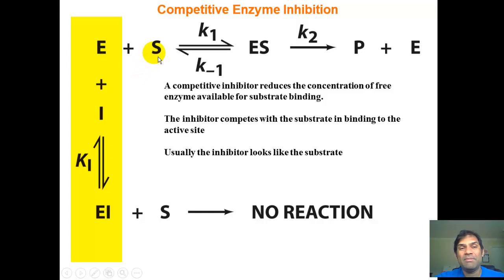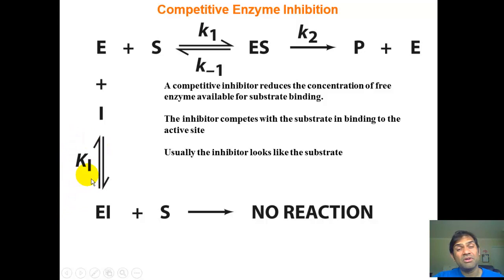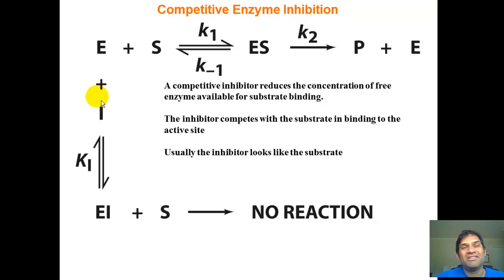When the inhibitor occupies the enzyme, you get the EI complex, which produces no reaction, temporarily halting enzyme activity. The nature of this inhibition stems from the dissociation constant KI. A high KI means the EI complex tends to dissociate back to free enzyme and free inhibitor, while a low KI means EI stays locked in that configuration, favoring competitive inhibition.